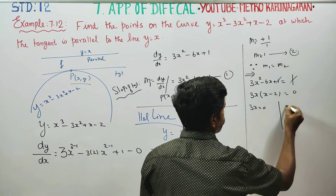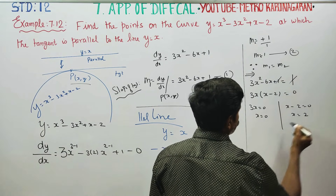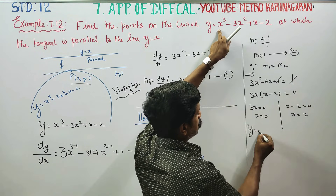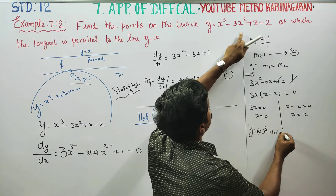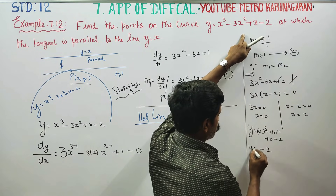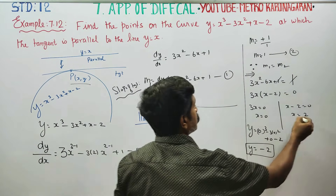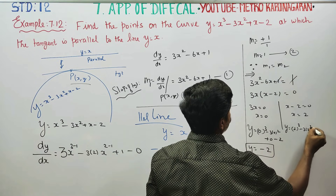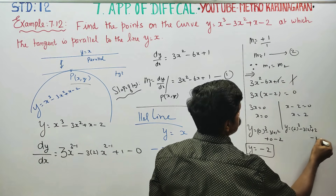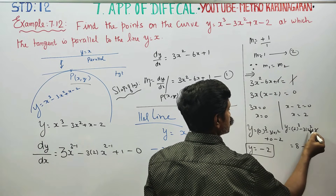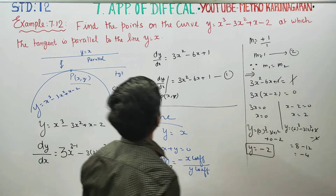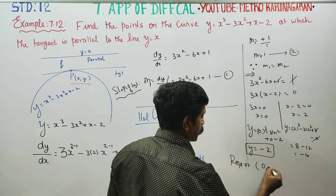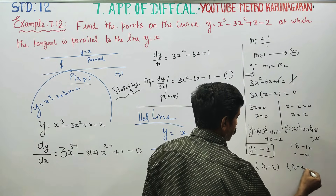Cancelling 1 from both sides and taking 3x common gives x(x minus 2) equals 0, so x equals 0 and x equals 2. Substituting into the curve equation: when x equals 0, y equals 0 minus 0 plus 0 minus 2, so y equals minus 2. When x equals 2, y equals 8 minus 12 plus 2 minus 2, so y equals minus 4.